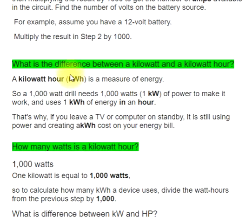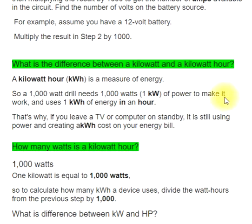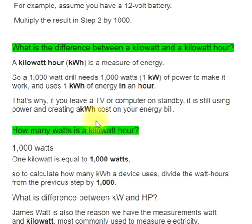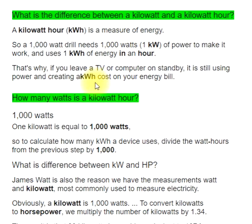What is the difference between a kilowatt and a kilowatt hour? A kilowatt hour (kWh) is a measure of energy. So a 1000-watt drill needs 1000 watts of power to make it work and uses 1 kilowatt hour of energy in an hour. That's why, if you leave a TV or computer on standby, it is still using power and creating a kWh cost on your energy bill.